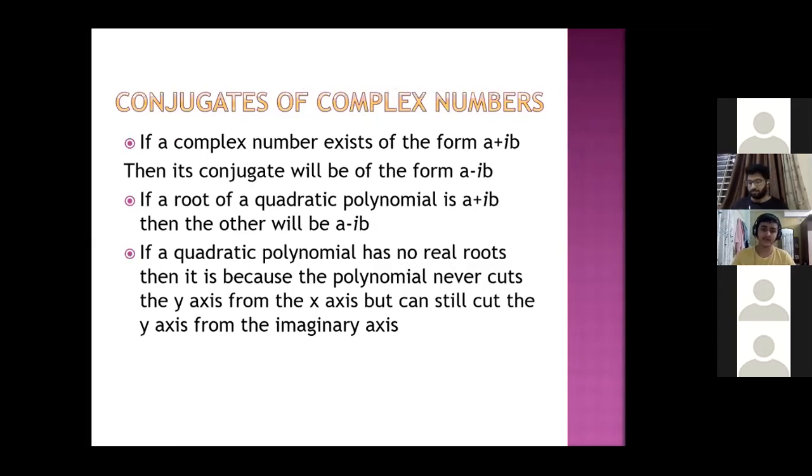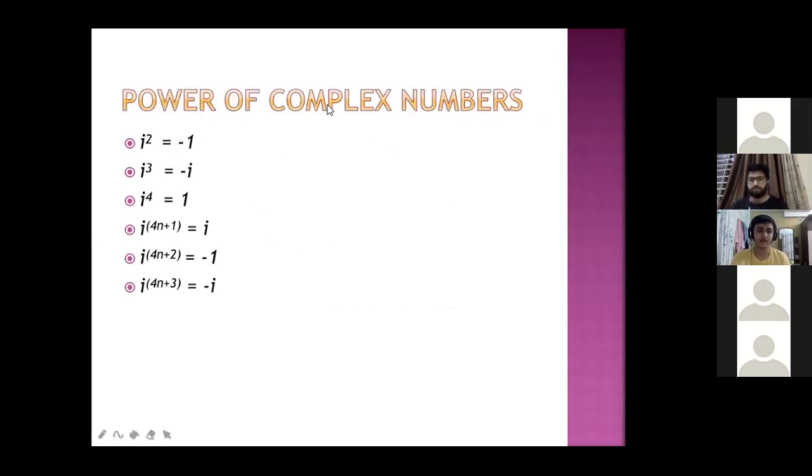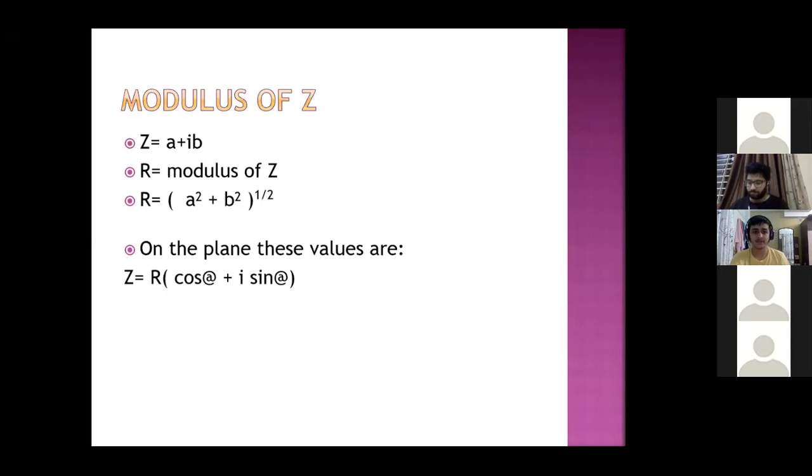Every complex number has a conjugate. And if we have a quadratic equation, if the roots are imaginary, then both will be conjugate, which we can prove. Then we have learned the powers of complex numbers. The modulus of z times its conjugate equals the modulus squared. If we represent a complex number a plus iota b on the Argand plane, we can write it as r cos alpha plus r iota sin alpha.